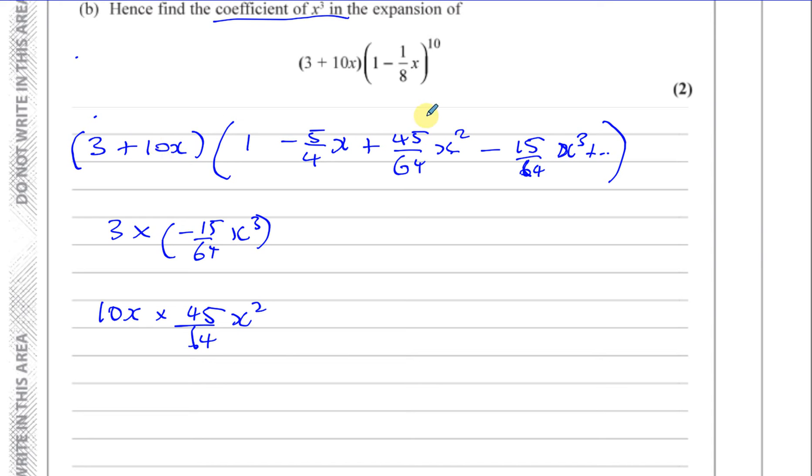And that's going to have 10x times that, and you're going to have x cubed times that. I think everything else will give you something that won't be an x cubed term. So it's these two terms that you have to add together. So that's 3 times minus 15, which is minus 45 over 64x cubed. And here you're going to have plus 450 over 64x cubed.